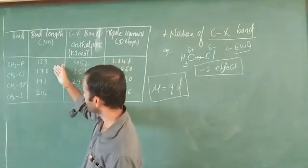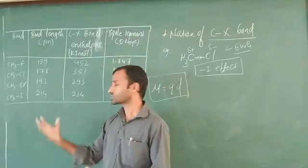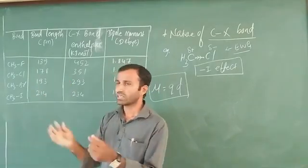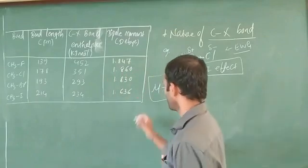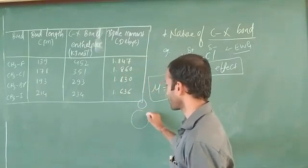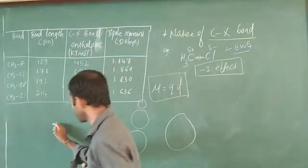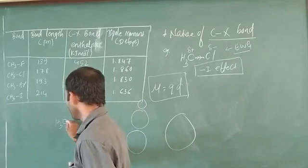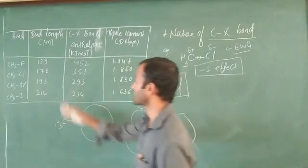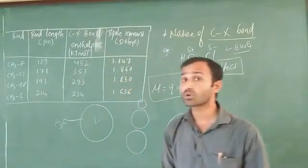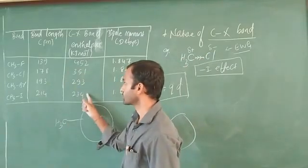Going down the group, bond length increases. This is because iodine has a larger size compared to fluorine — fluorine has the smallest size and size increases down the group, so bond length increases automatically. Carbon bonded to iodine has a much larger bond length than carbon bonded to fluorine. However, bond enthalpy decreases going down the group. Bond length and bond enthalpy are inversely proportional to each other.